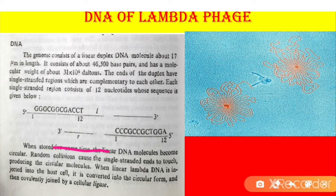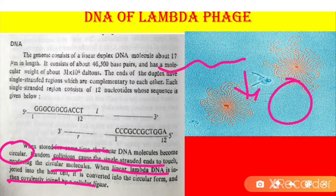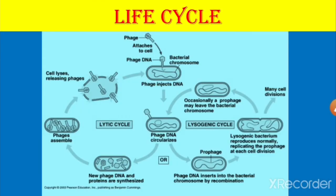When the DNA is stored for some time, the linear DNA molecules become circular. Random collisions cause the single-stranded ends to touch, producing circular molecules. When linear lambda DNA is injected into the host cell, it is converted into the circular form and then covalently joined by the cellular ligase enzyme.